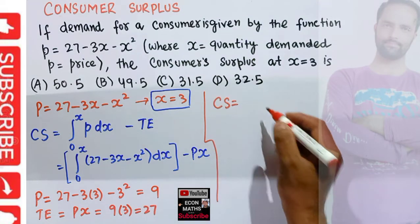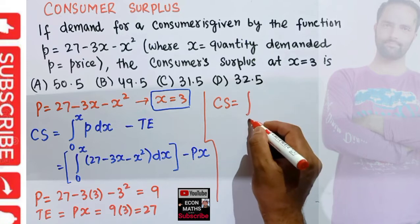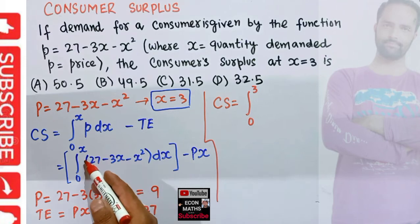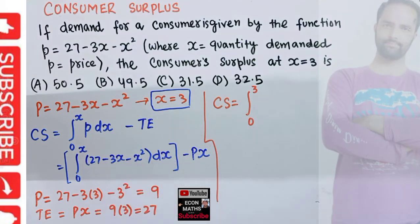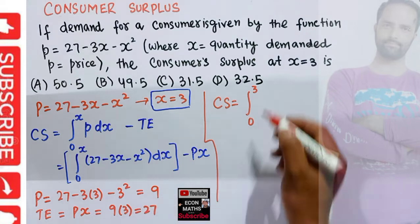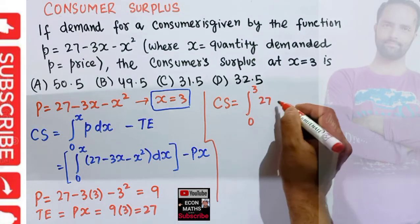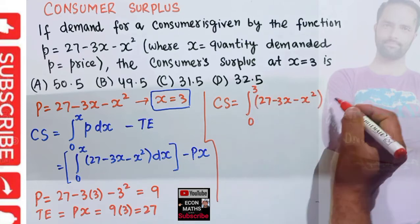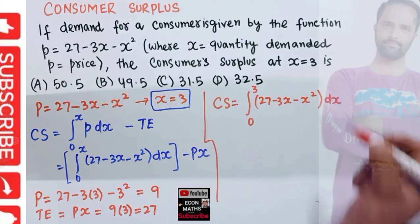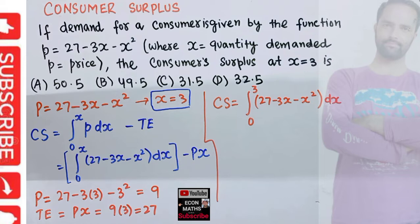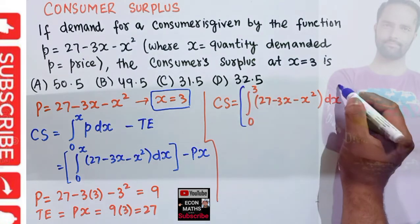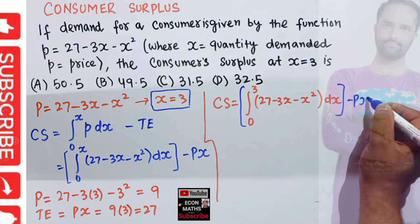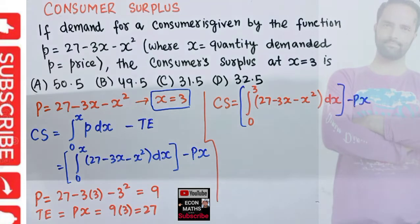Therefore, our consumer surplus equals the definite integral from 0 to 3 of the function 27 minus 3X minus X squared, with respect to X, minus the total expenditure, which is P times X equal to 27.